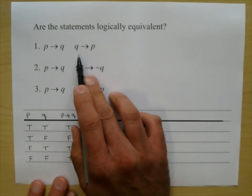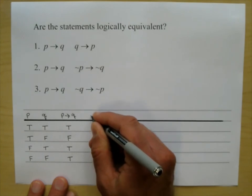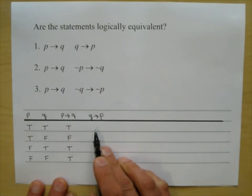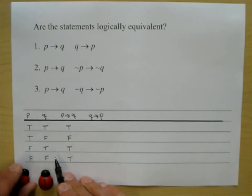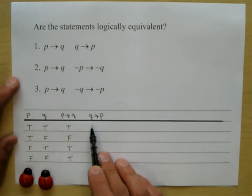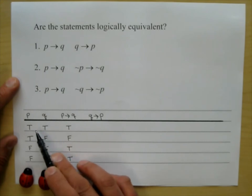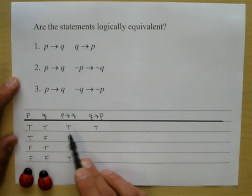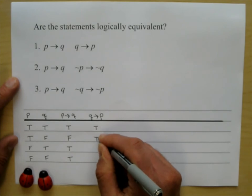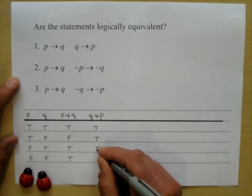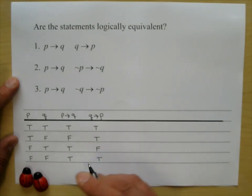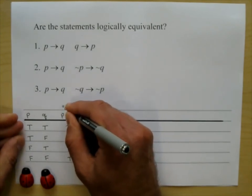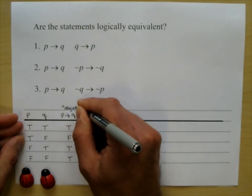Now let's add the next statement: Q then P. I have to be careful about the order — the hypothesis and the conclusion. If true then true is true. If false then true is also true. If true then false is false. And if false then false is true. This is the original statement in green.